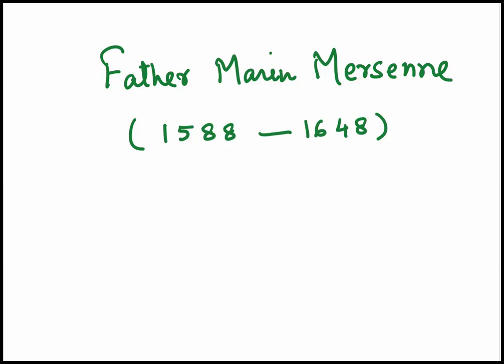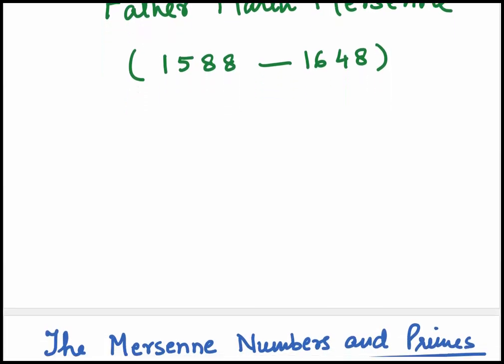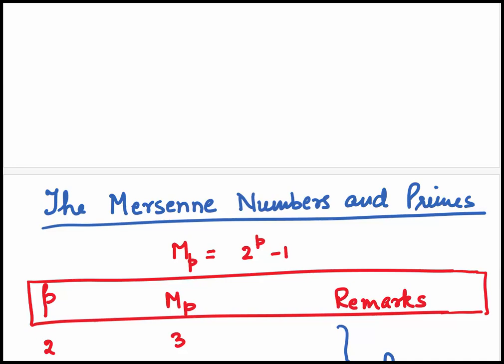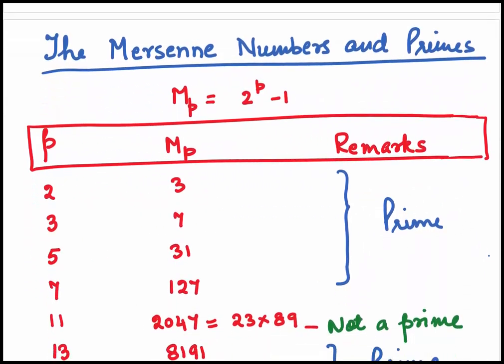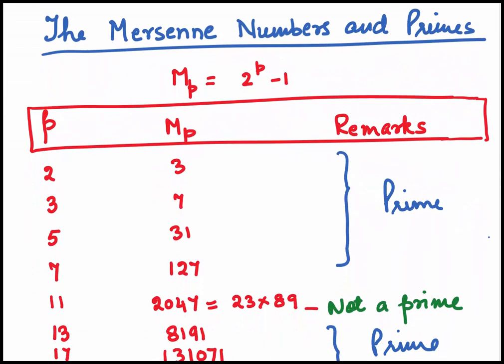Father Marin Mersenne existed from 1588 to 1648. Let's come to his numbers and primes. The formula Mp = 2^p - 1 gives us the Mersenne Numbers. When we take p = 2, we get Mp as 3. When we take p to be 3, we get Mp as 7.